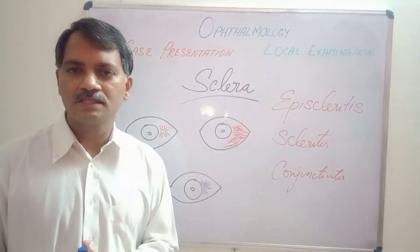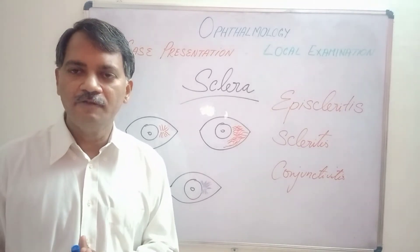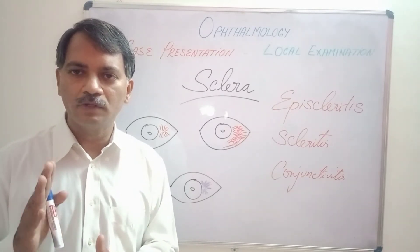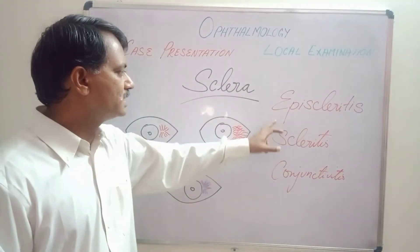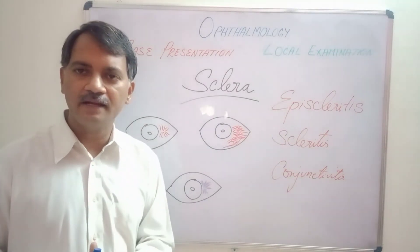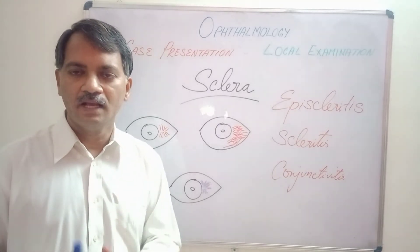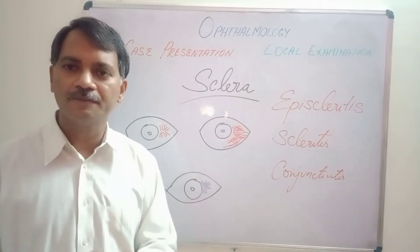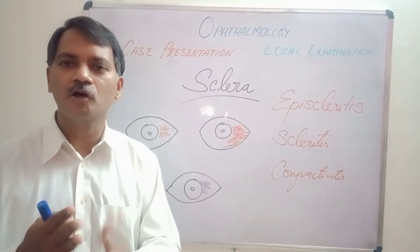Even though the sclera is relatively avascular compared to other structures, sometimes inflammation of the sclera can occur. Whenever we think about red eyes, we always consider three diagnoses: episcleritis, scleritis, and conjunctivitis. In conjunctivitis, there will be dilated, tortuous vessels which are diffuse and have an arborizing pattern — that is, the vessels cross each other.